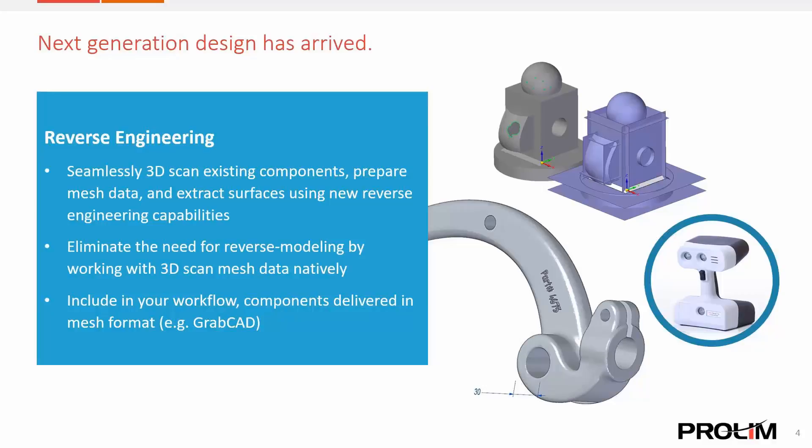Solid Edge delivers tools that speed your reverse engineering workflows. Mesh cleanup tools help attain bodies more conducive to modification and downstream manufacturing. We can delete unwanted meshes and repair defects such as gaps and holes. Region identification commands analyze triangular mesh regions and categorize them as traditional entities such as planes, cylinders, spheres, and B-spline surfaces.